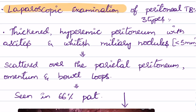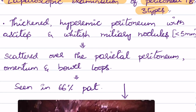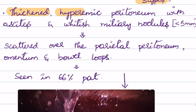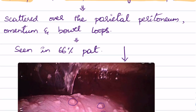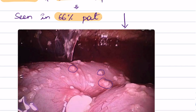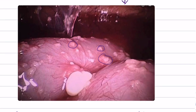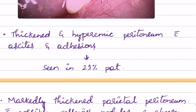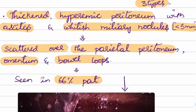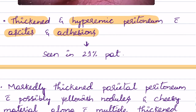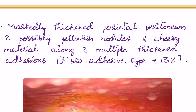Laparoscopic examination of peritoneal TB is mainly of three types. The first type shows thickened hyperemic peritoneum with ascites and whitish miliary nodules less than 5 mm, scattered all over the peritoneum, omentum, and bowel loops — seen in 66% of patients. The second type shows thickened hyperemic peritoneum with ascites and adhesions, with miliary nodules less than 5 mm — seen in 21% of patients.